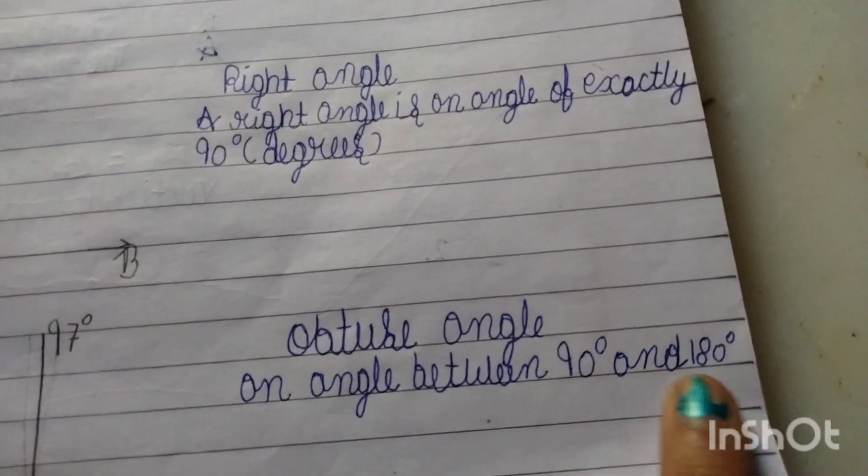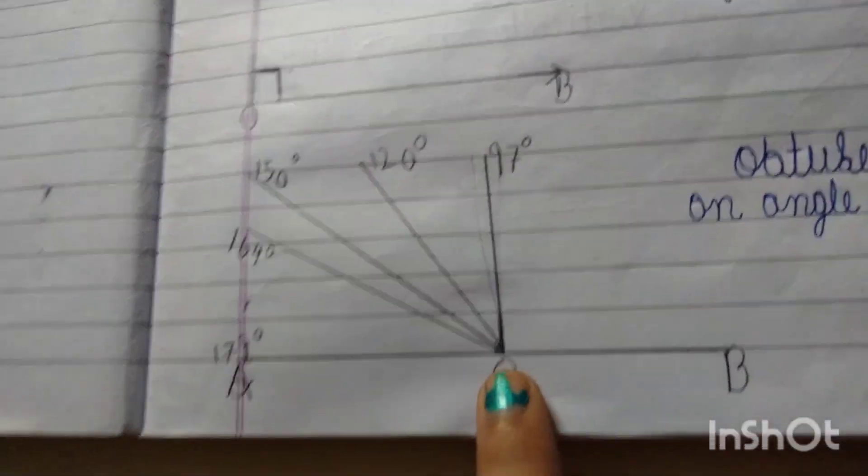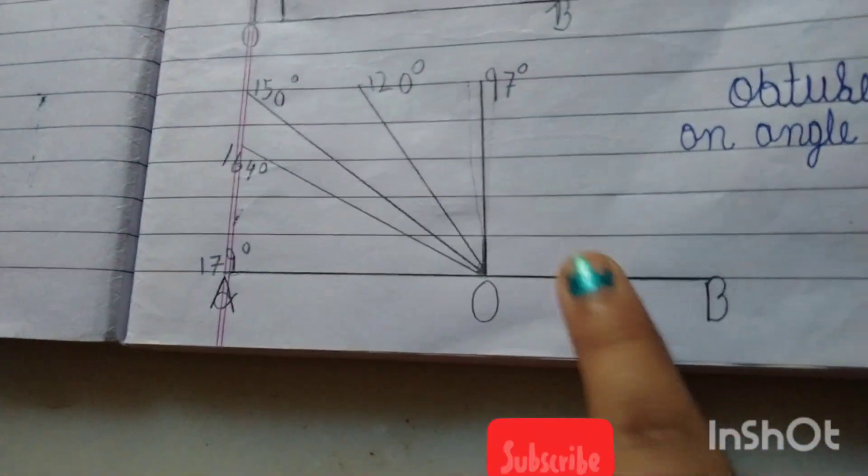Obtuse Angle: An angle between 90 and 180 degrees, which is always greater than 90 degrees and less than 180 degrees.